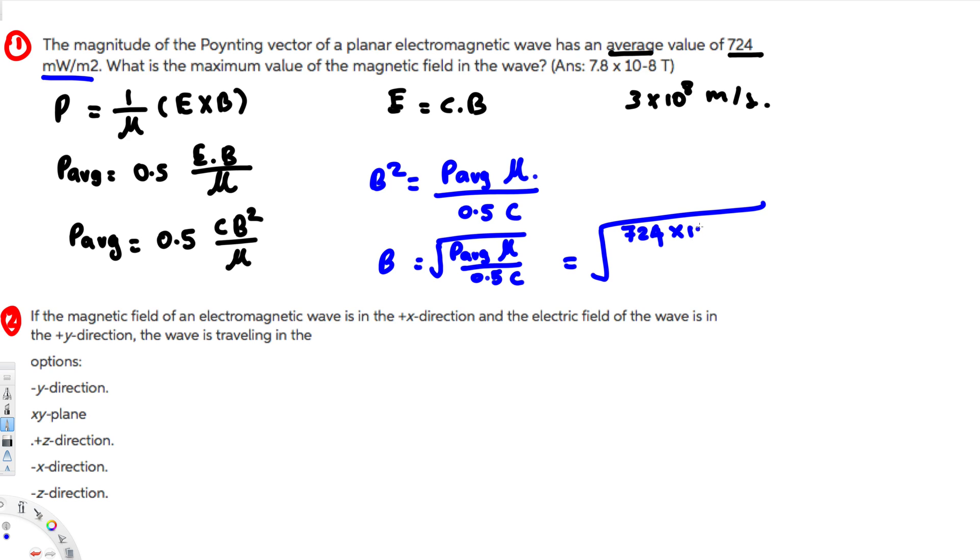And this is in milliwatt per meter square, so we have to multiply this one by 10 to the power of minus 3. And then μ is permeability constant, that is 4π times 10 to the power of minus 7. And then we have 0.5 in the denominator.